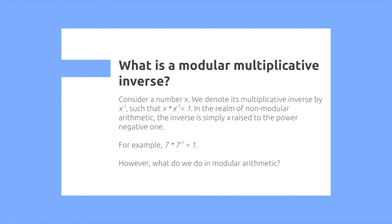So you have 7 times 7 to the power of negative 1, and then this equals to 1. However, how do we do this in modular arithmetic?